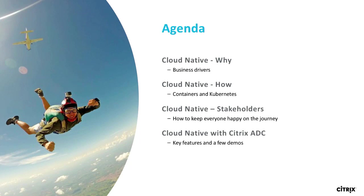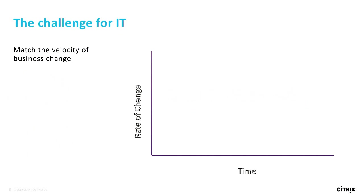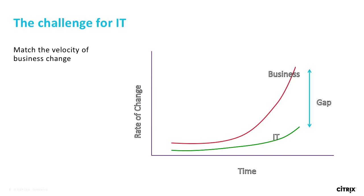So why Cloud Native? It's really about the velocity of the business. Companies are going through a dramatic change. They're looking to do more things, be closer to their customers, build more custom apps. That requires a lot of requests to the IT team, and the IT team hits a wall — they can't adapt as fast as the company. People are siloed, so there's a requirement for the company to change to overcome this gap.